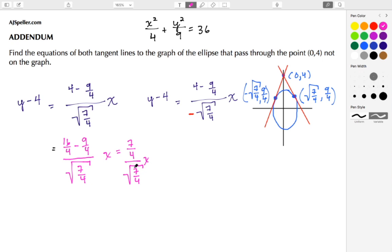What I need to do is rationalize this denominator because I shouldn't have the square root of something irrational in my denominator. So I'm going to take the square root of 7/4 and multiply that by the denominator and also multiply that by the numerator.